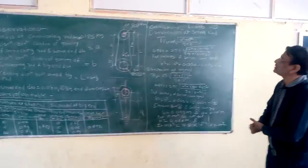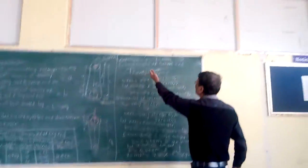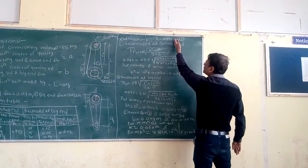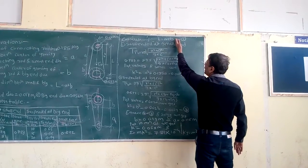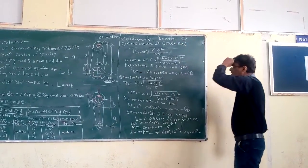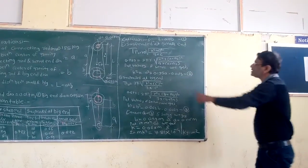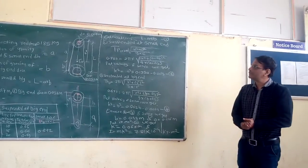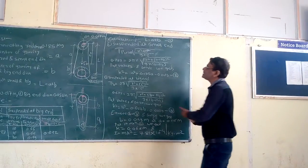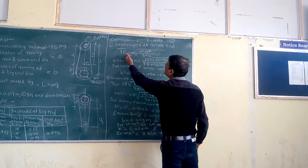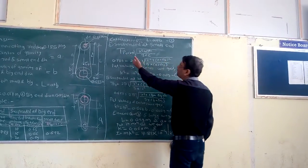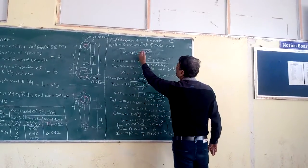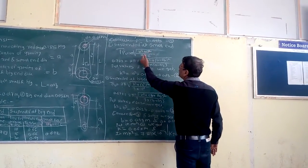Now let us move towards the calculations. L is equal to a plus b, and is the distance between the center of the big end diameter and the small end diameter. It is nothing but 0.165 meter. This is the formula TPS — the time period when the connecting rod is suspended from the small end — equal to 2π under root of (K² plus L'²) divided by (g into L').